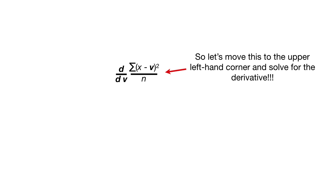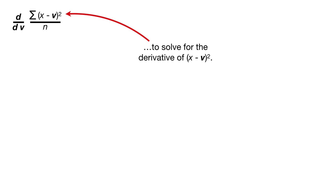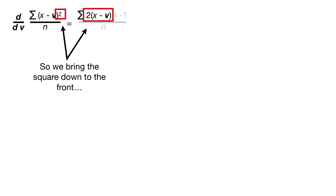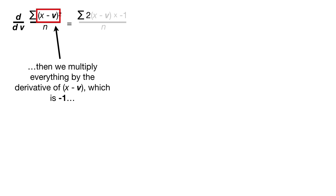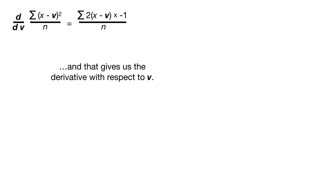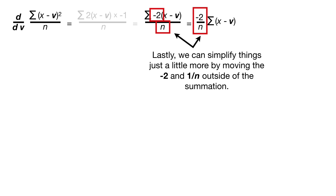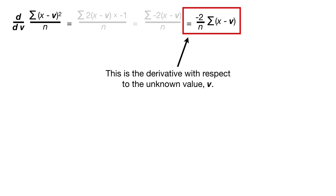Let's move this to the upper left-hand corner and solve for the derivative. We use the chain rule to solve for the derivative of (x minus v) squared. We bring the square down to the front, then multiply everything by the derivative of x minus v, which is negative 1, because the derivative of x with respect to v is 0 and the derivative of negative v is negative 1. That gives us the derivative with respect to v. We simplify by multiplying 2 and negative 1, and then move the negative 2 and 1/n outside of the summation. This is the derivative with respect to the unknown value v.